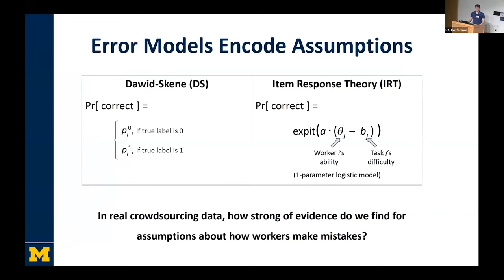So our paper is about using real crowdsourcing data sets to test various assumptions that are implied by these error models and seeing what we find are more plausible or less plausible assumptions. So if you'd like to learn more about what assumptions we investigate, what data sets we use, and how we do it, please come stop by my poster. Thanks.